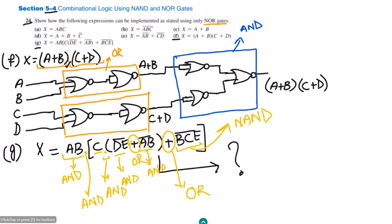This is the solution outline of part g, and I strongly recommend that you implement this expression by yourself. Previously I have solved all the relevant examples just like this one, and in our upcoming video we will talk about the implementation of the same gates using NAND gates. Till then, take care of yourself and I will see you soon.